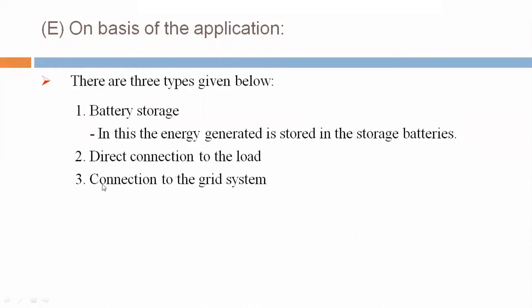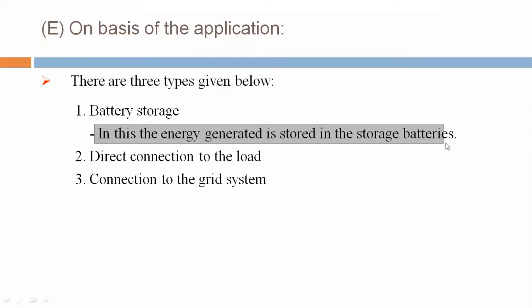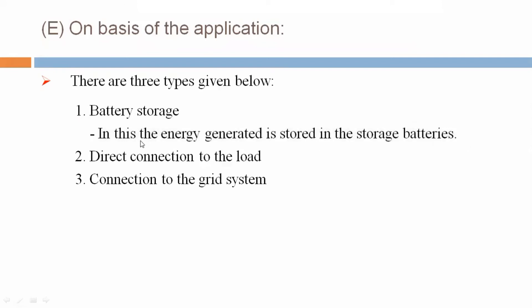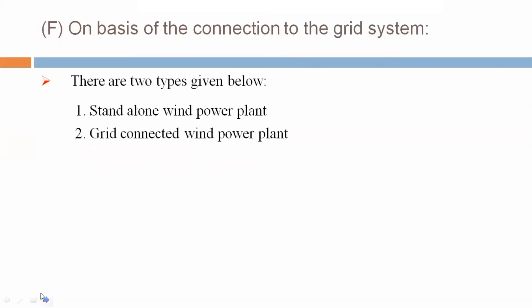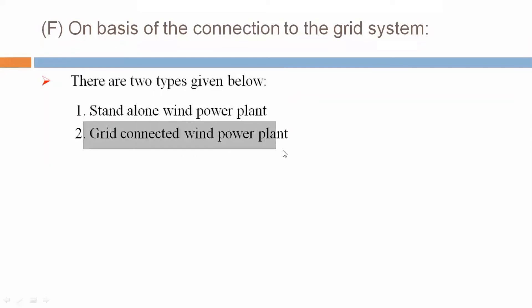E: On the basis of application, there are three types: battery storage, in which the energy generated is stored in a storage battery; and direct connection to the load. F: On the basis of connection to the grid system, there are two types: first, standalone wind power plant, and second, grid connected wind power plant.